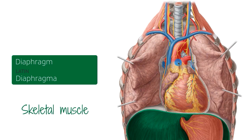This is found in the trunk of your body and separates the thoracic and abdominal cavities. So you have the thoracic cavity and below you find the abdominal cavity, divided by the diaphragm highlighted in green. The superior border of the diaphragm is continuous with the xiphoid process anteriorly, the lower six costal cartilages laterally, and the first to third lumbar vertebrae posteriorly — bony landmarks you can use as coordinates to find the diaphragm.